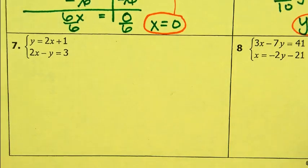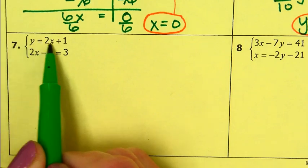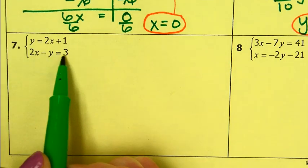Number seven. So I've got y equals 2x plus 1, and 2x minus y equals 3.